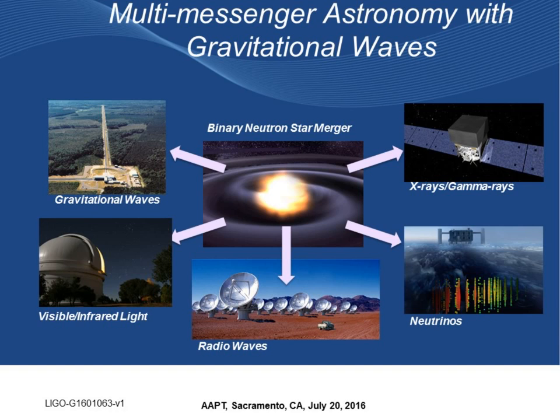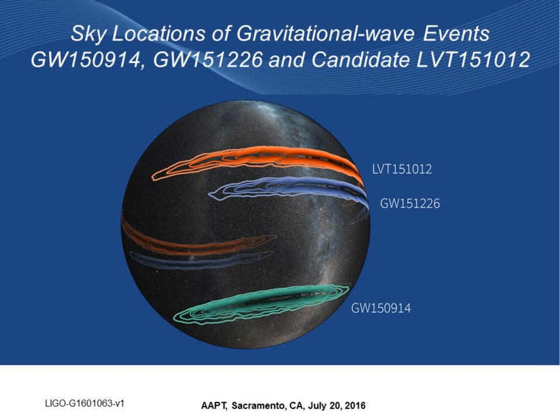With two detectors, our sky localization isn't great. But when you bring in even one more interferometer like Virgo, the localization improves dramatically — that's something astronomers get very excited about. We had 25 electromagnetic partners follow up our events, covering most of the sky area. Adding a third detector shows the real power of the network.